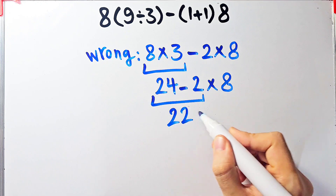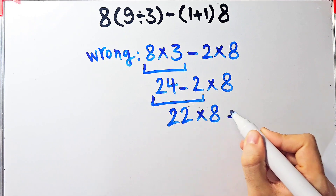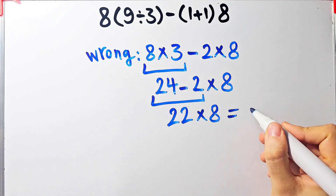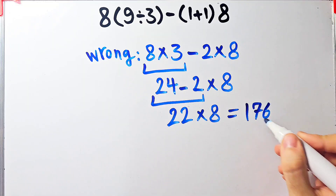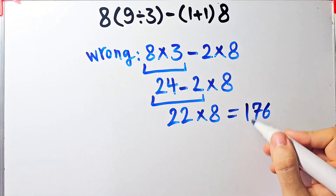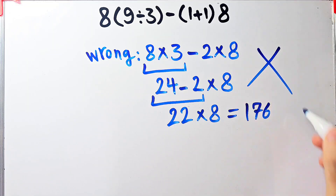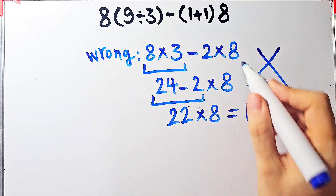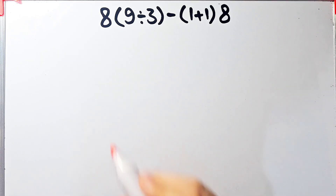And 22 times 8 equals 176. They say the final answer of this question equals 176. But this answer is definitely wrong. Let's solve this question step by step together.